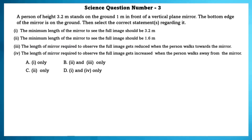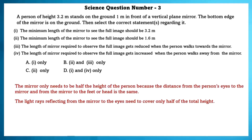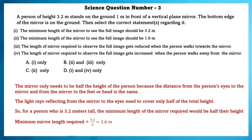Science question 3. A person of height 3.2 meters stands on ground 1 meter in front of a vertical plane mirror. The bottom edge of the mirror is on the ground. The mirror only needs to be half the height of the person because the distance from the person's eye to the mirror and from the mirror to the feet or head is the same. The light rays reflecting from the mirror to the eyes need to cover only half the total distance. So for a person who is 3.2 meters tall, the minimum length of mirror required is 3.2 ÷ 2 = 1.6 meters. Only the second option is correct.